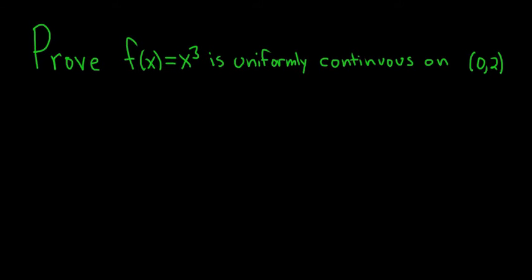Before we do the proof, let's recall what it means for a function to be uniformly continuous on an interval. So in this case, f of x, or f, is uniformly continuous.